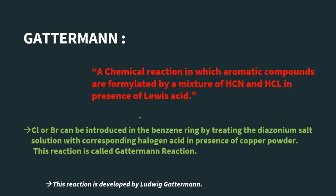Difficult, right? Now let's understand the simple definition. To obtain chlorobenzene and bromobenzene, it reacts with diazonium salts with corresponding halogen acid in presence of copper powder.